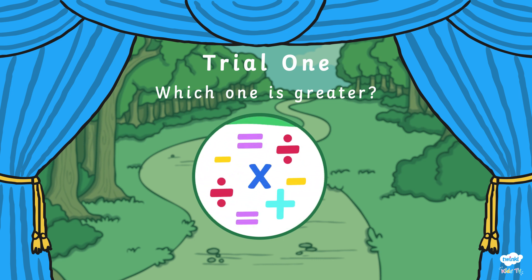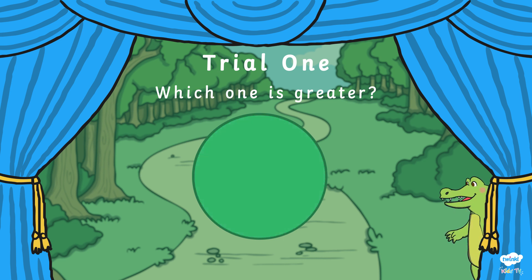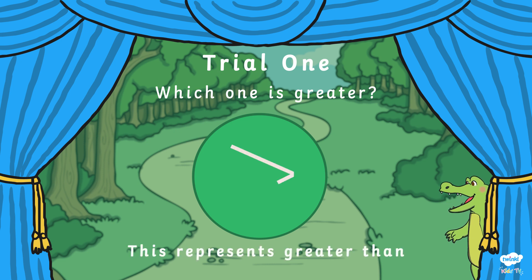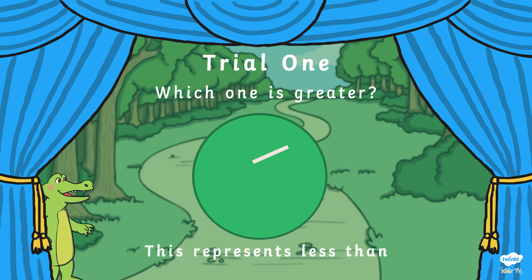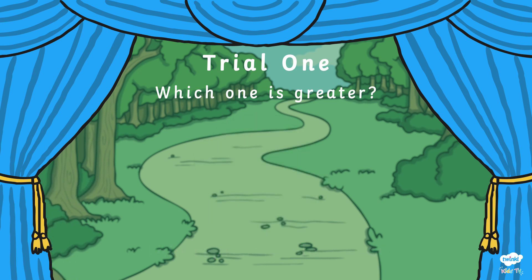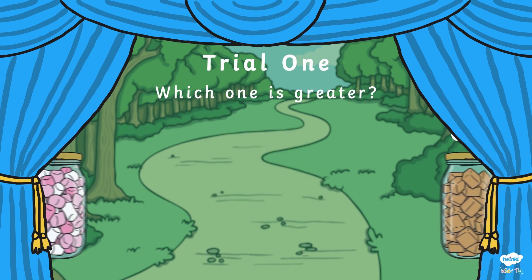There is a special set of symbols that we use when representing what is greater than and less than. When something is greater than, we place the arrow to point away from the number. And when something is less than, we place the arrow in the opposite direction, pointing at the number.